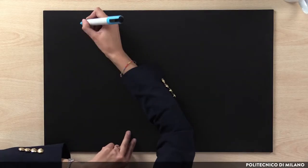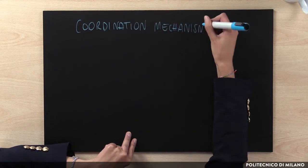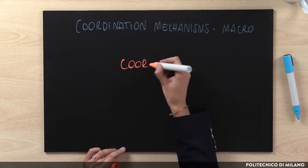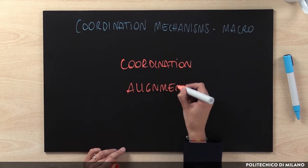In this lecture we are going to investigate the concept of coordination mechanisms at the macro level, referring to coordination among units. Coordination mechanisms at the macro level are those mechanisms put in place to solve the coordination problems within organizational units. In other words, we need mechanisms that ensure coordination and alignment between the different organizational units.